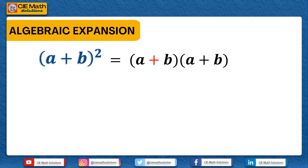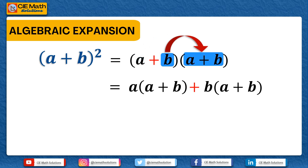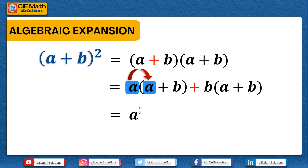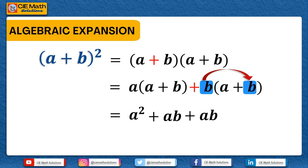Using the distributive property of multiplication, we could multiply each term of the first group to each term of the second group. That is, a multiplied to the quantity a plus b, and also b multiplied to the quantity a plus b. Further, we could multiply a to each term in a plus b: a multiplied by a gives us a squared using the multiplication law of indices, and a multiplied by b gives us ab. On the second term, b multiplied by a gives us ab, and b multiplied by b gives us b squared.